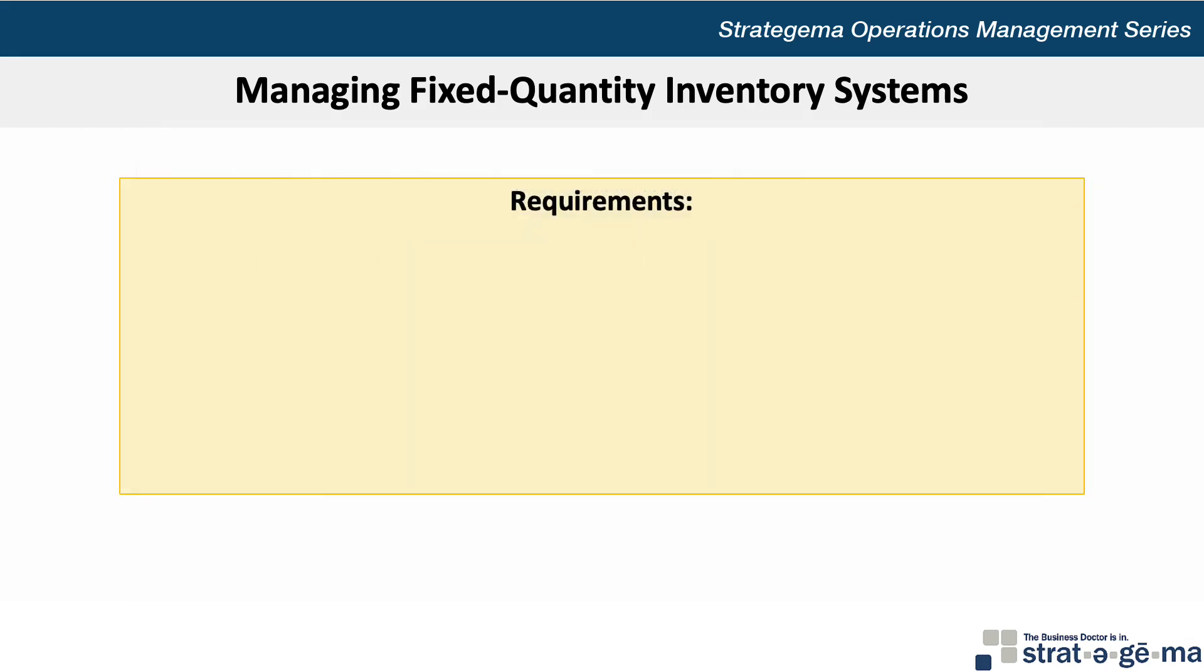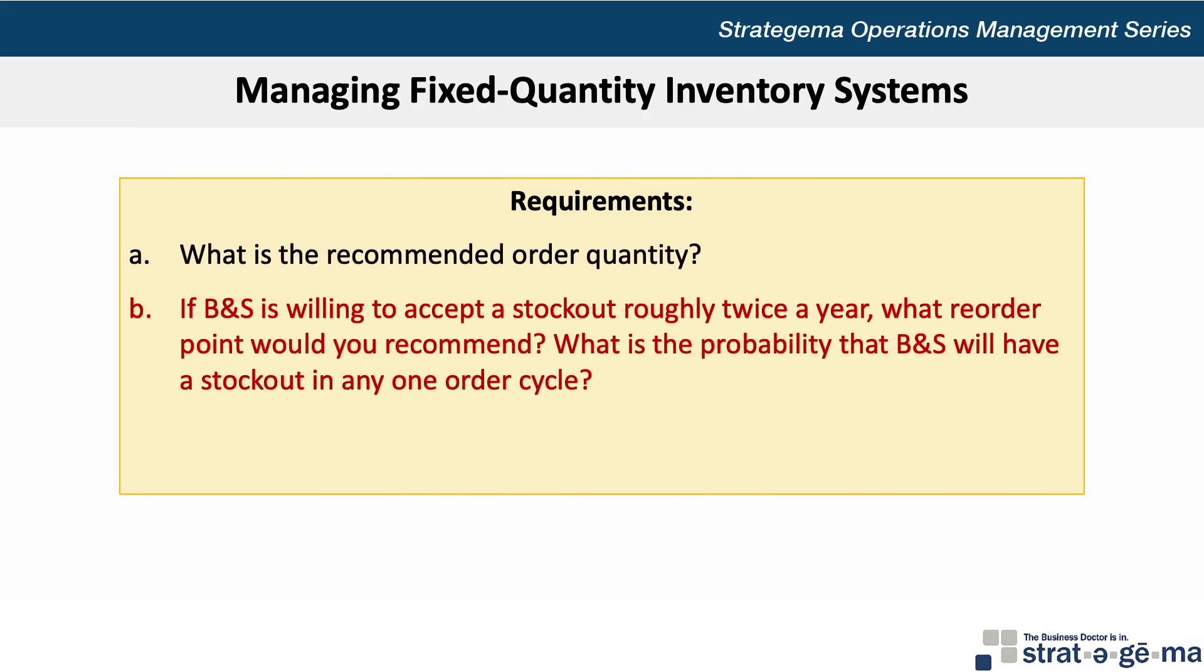There are three questions for us to solve. A. What is the recommended order quantity? B. If B&S is willing to accept a stockout roughly twice a year, what reorder point would you recommend, and what is the probability that B&S will have a stockout in any one order cycle? And C. What is the safety stock level and annual safety stock costs for this product?